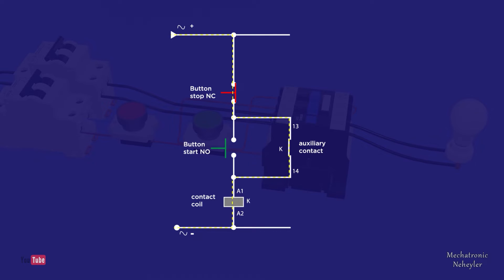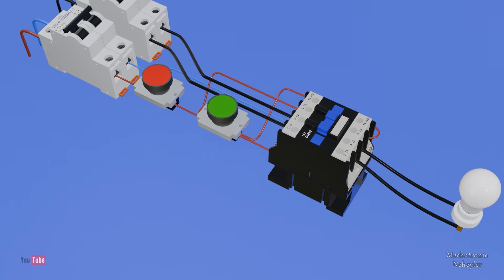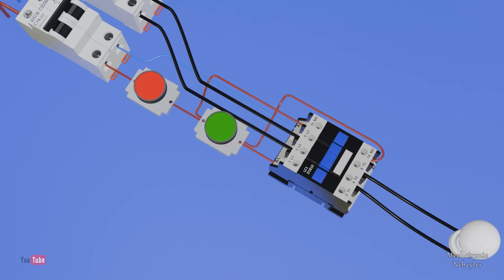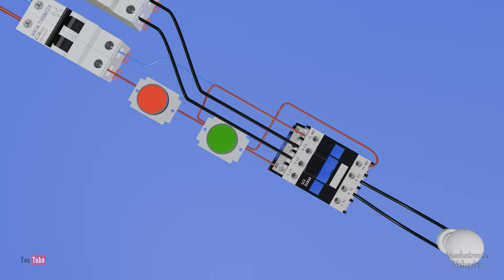To de-energize the coil, simply cut off the current by pressing the stop button to open the circuit. Now let's see this entire circuit in this animation where it simulates the operation of real components.